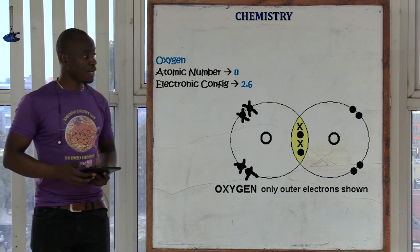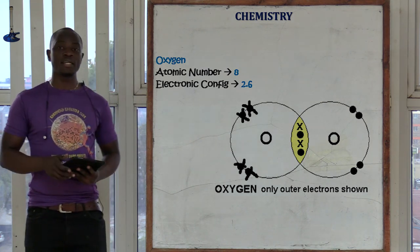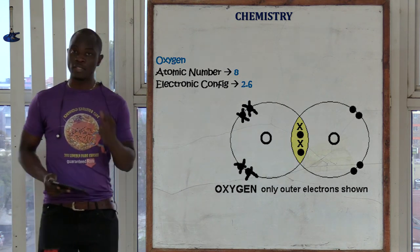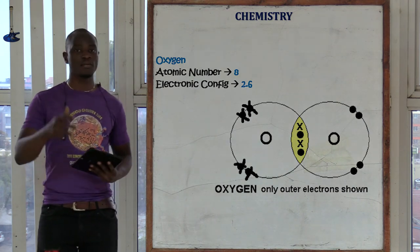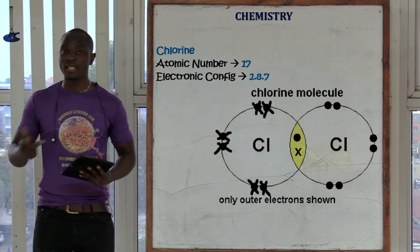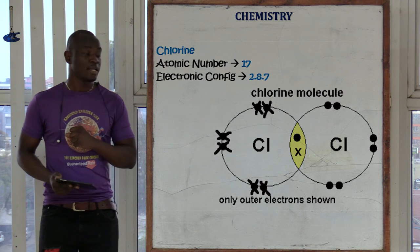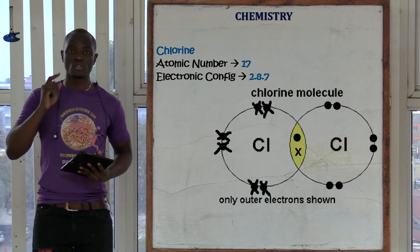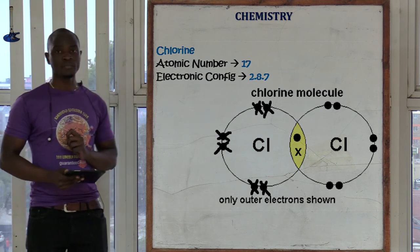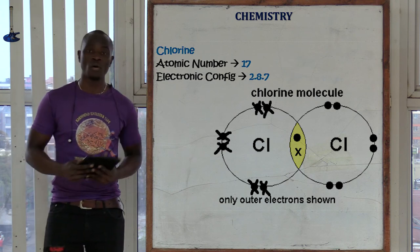When drawing covalent bonds, always use joined or interlocked circles. Oxygen has a valency of two, so each oxygen atom must share two electrons with the other. For chlorine, the valency is one, so each chlorine atom shares one electron to become stable. We covered this in detail in the previous classes; if you didn't get it, please go back to that class where we expounded more on the different types of bonds.